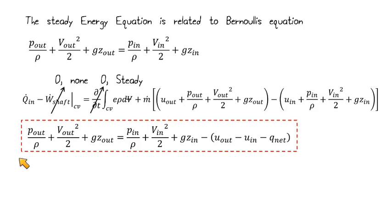We have the pressure out over rho plus V out squared over 2 plus GZ out equals the pressure in over rho plus V in squared over 2 plus GZ in. This part is Bernoulli's equation, and then we subtract off U out minus U in minus Q net, where here we have the heat transfer per unit volume. So in this case, where we had the uniform velocities, that's what we needed to do in order to get rid of that control surface integral, we're able to show that this is the Bernoulli equation plus this extra term.